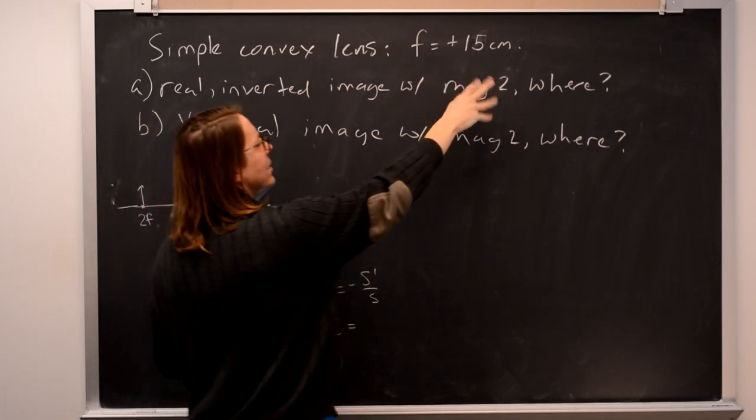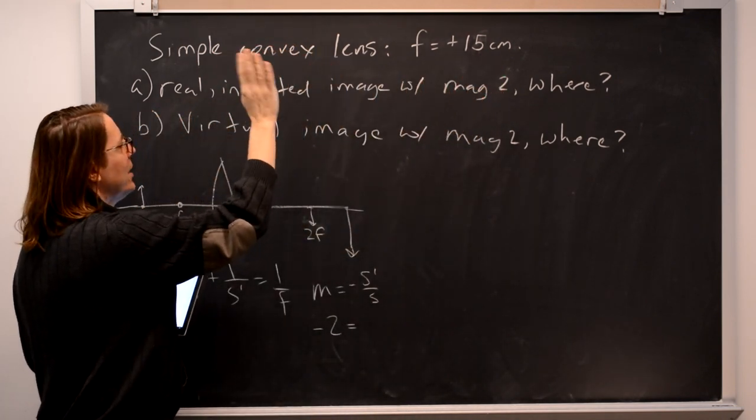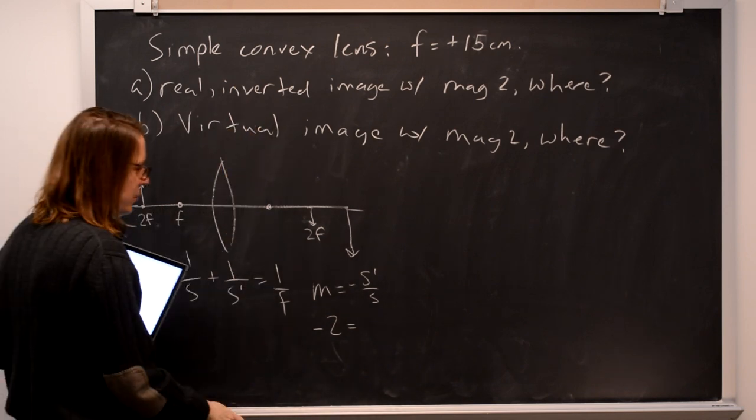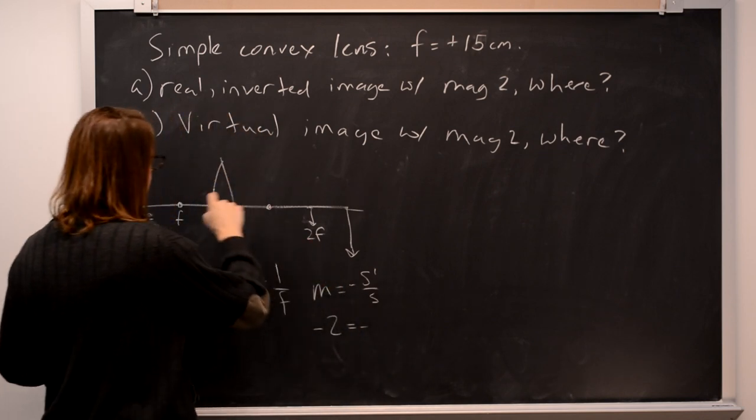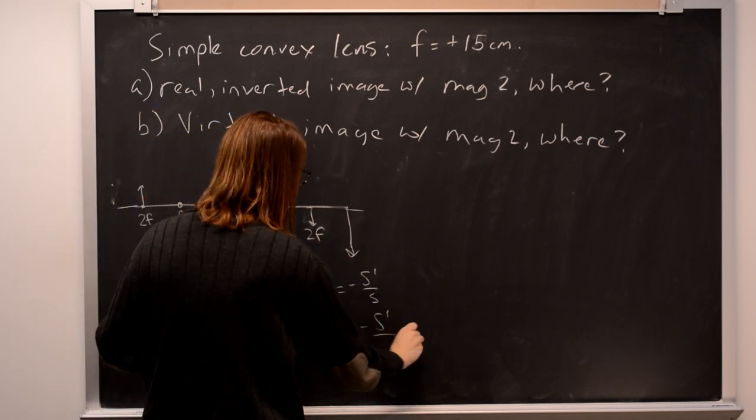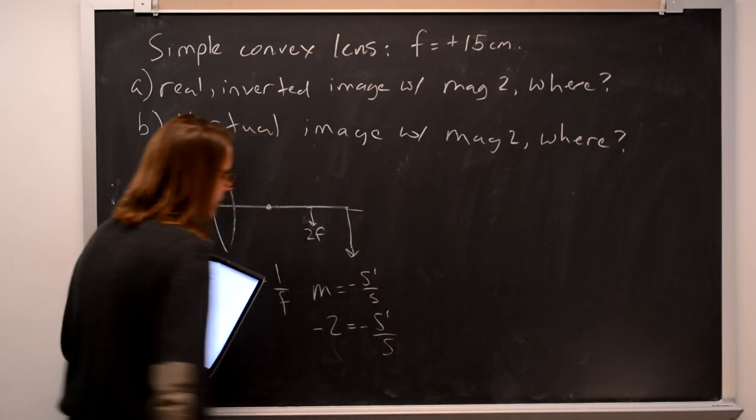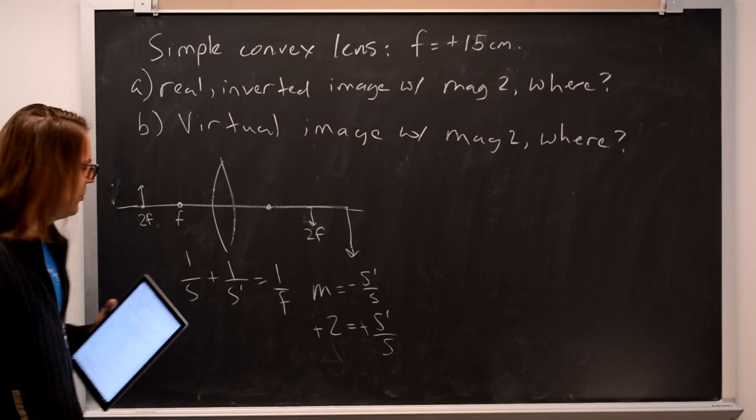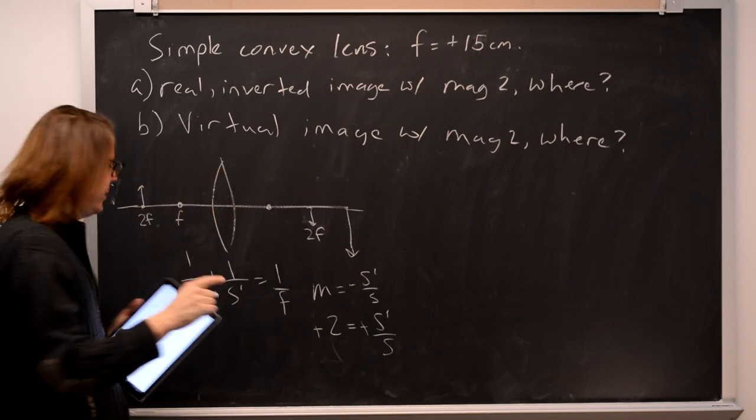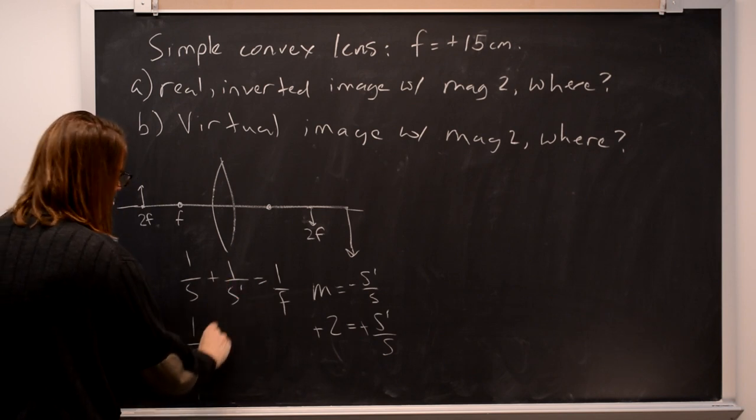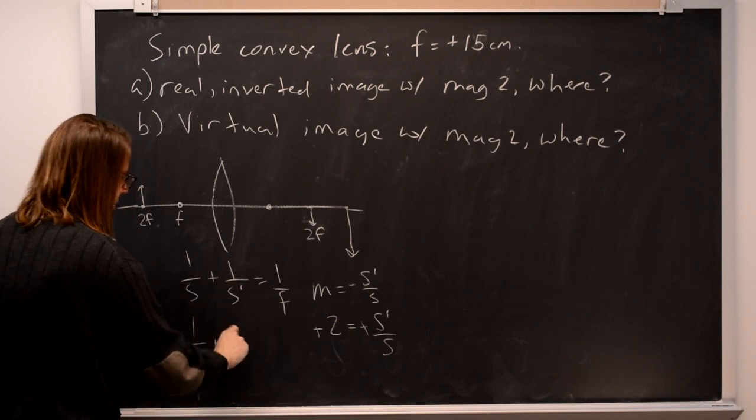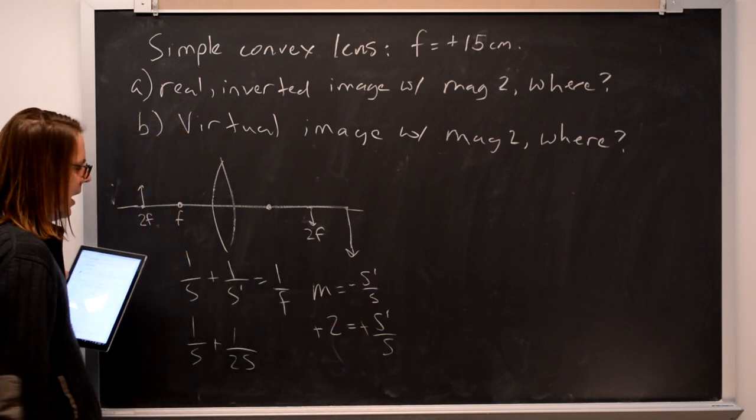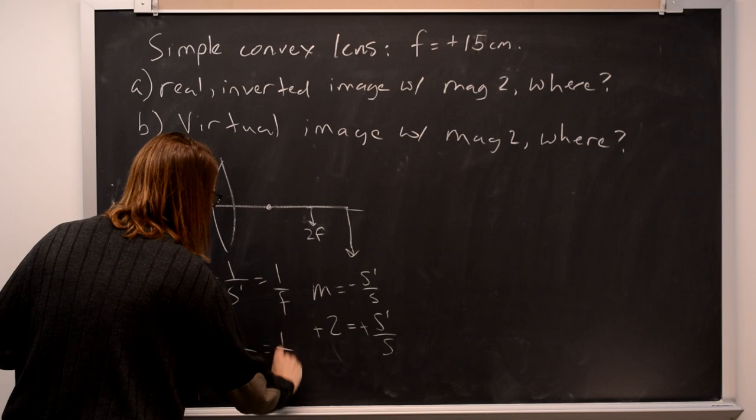If you said wait, I didn't understand, was that plus or minus 2? You had to know it's minus 2 because it's real and it's inverted. So minus 2 equals minus the image distance which we don't know, s prime, and the object distance which we don't know, s. We do know that they're a factor of two difference between them. So if we're looking for where the object goes, let's leave 1 over s here and plug in 1 over s prime as 2s. That equals 1 over 15.